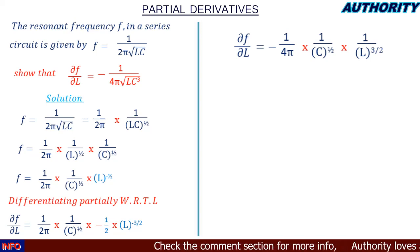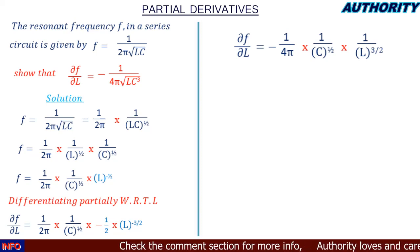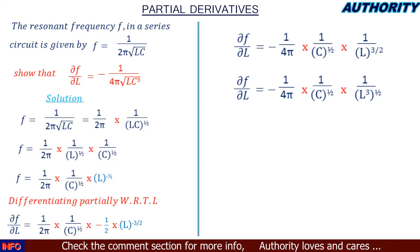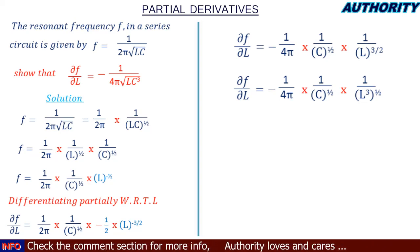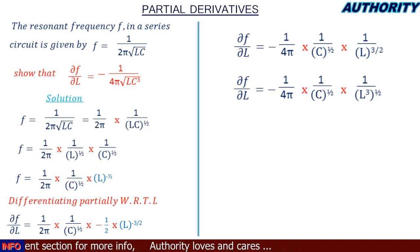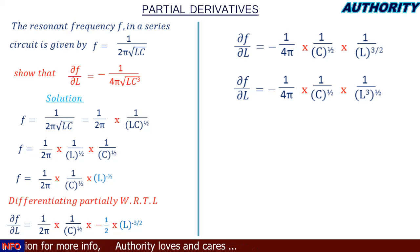We can factor L^(3/2) as L³ × L^(1/2), since 3 × (1/2) = 3/2. This lets us write the expression as −1 / (4π) × (1 / C^(1/2)) × (1 / L³)^(1/2), which is still equivalent.